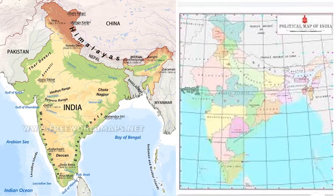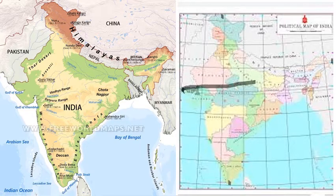India, the seventh largest country in the world, has an area of 3.28 million square kilometers. The distance from Kashmir to Kanyakumari — that is, the north-south extent of India — is about 3,200 kilometers. The east-west distance from Rann of Kutch to Arunachal Pradesh is roughly 2,900 kilometers.